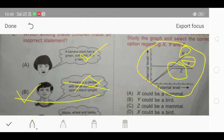The correct answer for question number 4 is option B, which says that Y could be a bird. So, for question number 4, B option is correct.